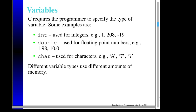An int can only represent integers — that's zero, positive integers, or negative integers. A double can represent integers as well, but it also can represent numbers with decimal portions, like 1.98. But I still could represent 1, 208, or negative 19 using a double.